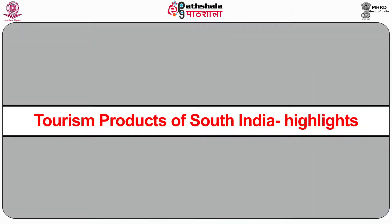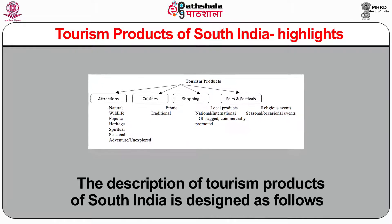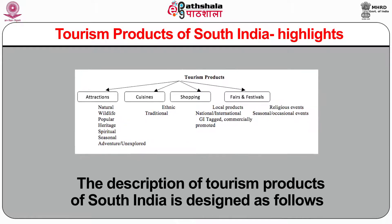Looking at the tourism product offerings, state governments aggressively promote natural attractions such as beaches, hill stations, backwaters, and religious places such as temples, shrines, pilgrimages, religious observations and gatherings like Godavari Pushkaram, Krishna Pushkaram, wildlife sanctuaries, cultural features, historical attractions, indigenous lifestyle, and regional agricultural products. The description of tourism products of South India is designed as follows.